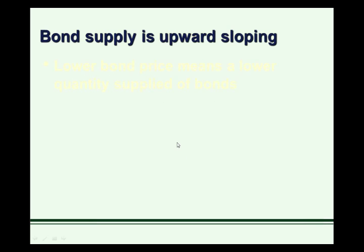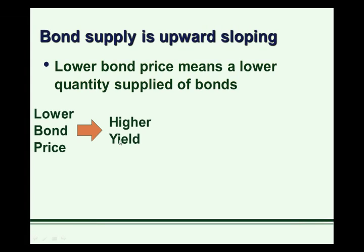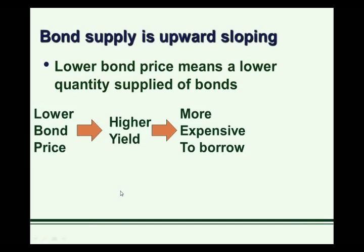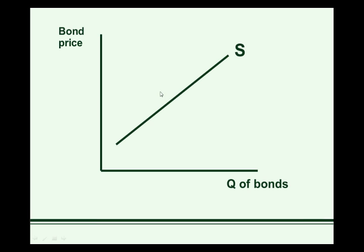Like any supply curve, the bond supply curve is upward sloping. A lower bond price means a lower quantity supplied of bonds. Let's think about why that would be true. A lower bond price means a higher yield — bond price and yield move in opposite directions. A higher yield means it's more expensive to borrow money, so those people that make up the bond supply curve are less likely to borrow at higher yields. That gives us a lower quantity supplied of bonds — hence the upward sloping bond supply curve. Conversely, a higher bond price means a higher quantity supplied of bonds.